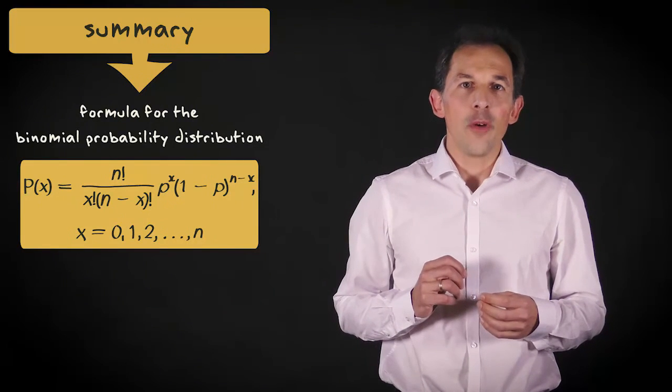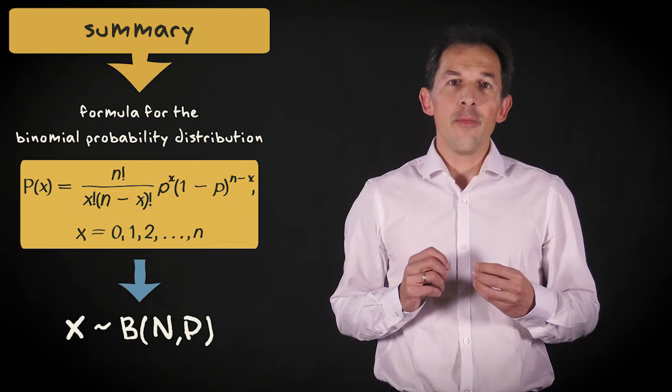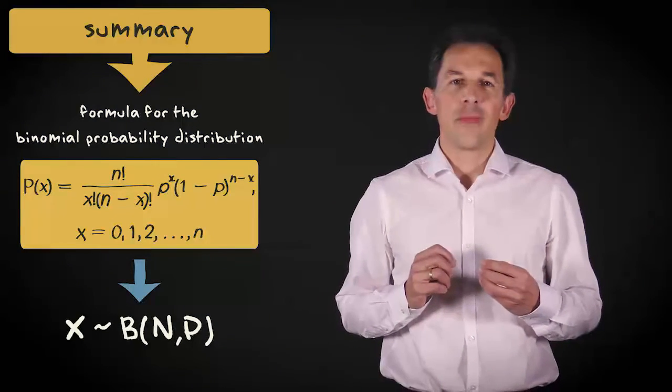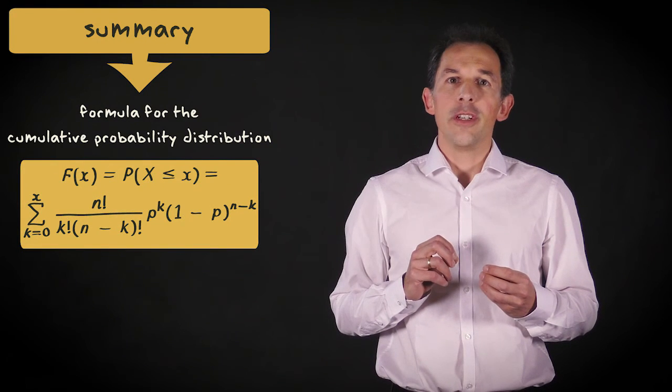Here the formula for the binomial probability distribution is shown. And this is the same formula in shorthand. Finally, the formula for the cumulative probability distribution is shown here.